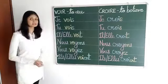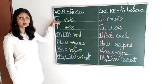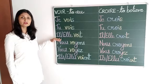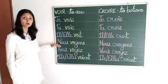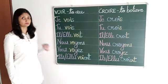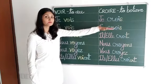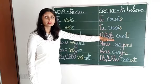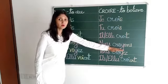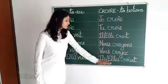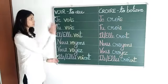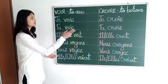Once again I am going to repeat the pronunciation. Je vois, Tu vois, Il voit, Elle voit, Nous voyons, Vous voyez, Ils voient, Elles voient. Je crois, Tu crois, Il croit, Elle croit, Nous croyons, Vous croyez, Ils croient, Elles croient. So these two verbs are conjugated with the same pattern.